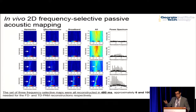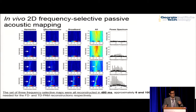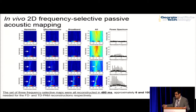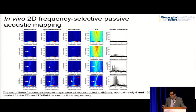Finally, we wanted to see whether frequency selectivity can be used to characterize the mode of oscillation. In the rows you can see different reconstructed maps using different frequency components, and in the columns you see data from different experiments. We are able to reconstruct maps using different frequency components.